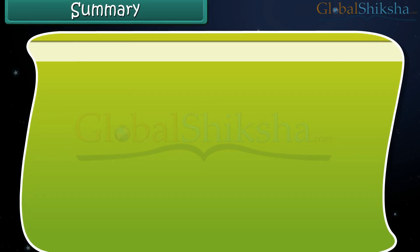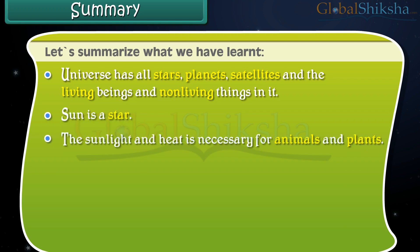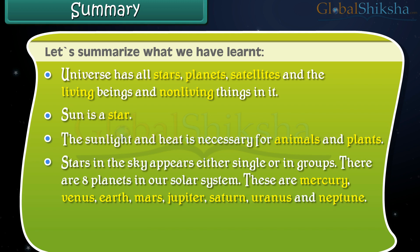Now friends, let's summarize what we have learned so far. Universe has all stars, planets, satellites and the living beings and non-living things in it. Sun is a star. The sunlight and heat is necessary for animals and plants. Stars in the sky appear either single or in groups.